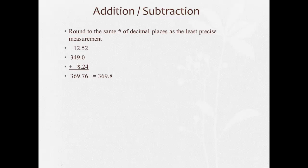So if we look at a math problem here, we have 12.52 plus 349.0 plus 8.24. Now the least precise measurement is the one with the least number of significant figures,